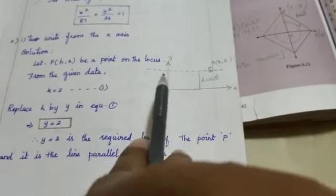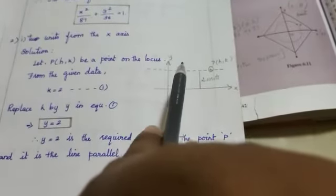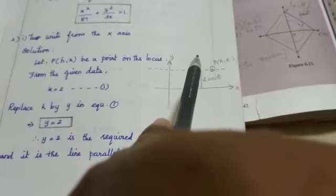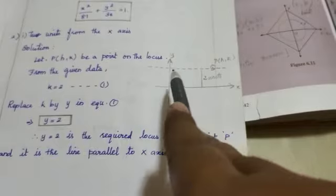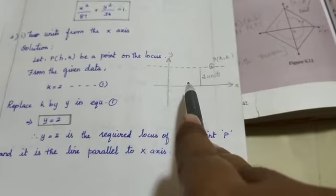See here. Where Y is getting the value of 2, in that place only this point is moving and this line is parallel to x-axis. Are you clear students?